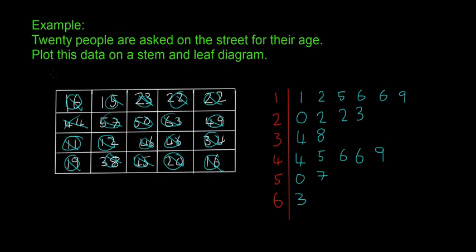It's almost done now. The last thing you have to do—and this is really important—is write a key. We'll pick four and four here, so four line four equals forty-four.